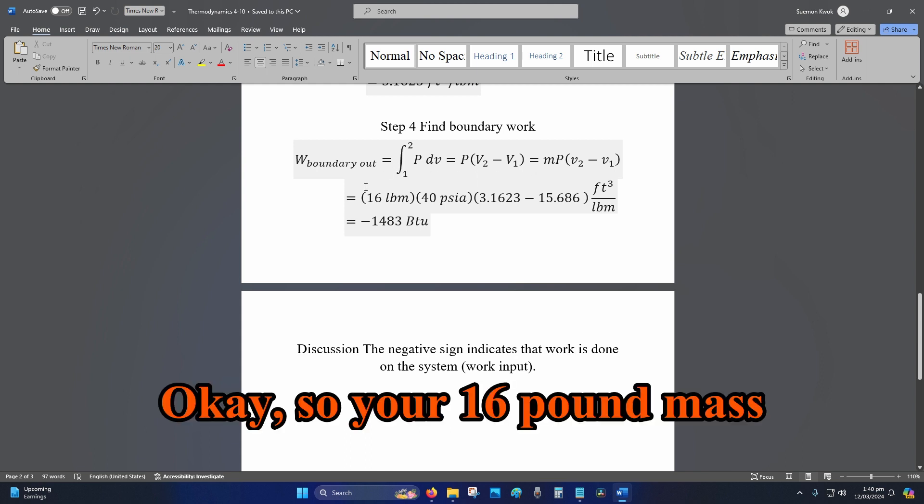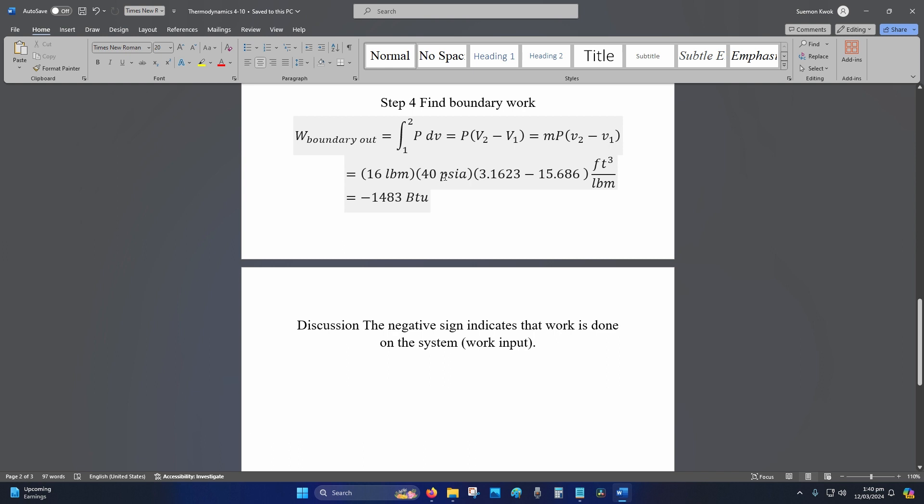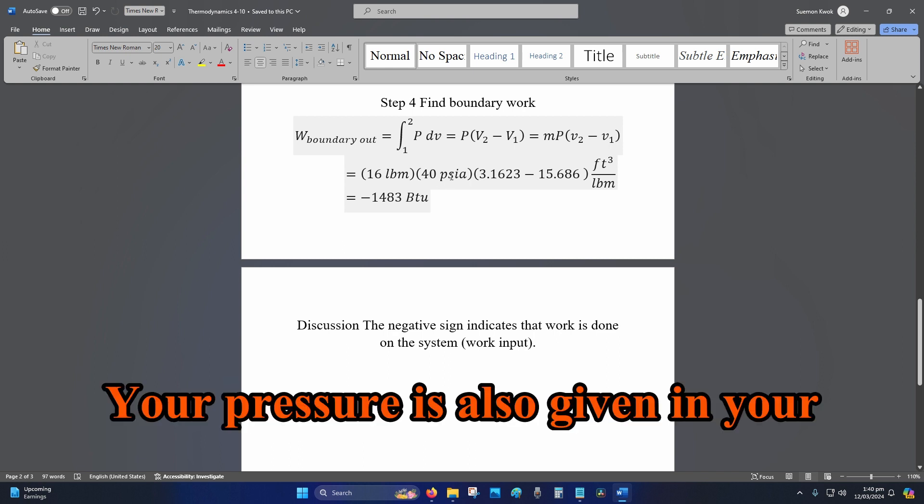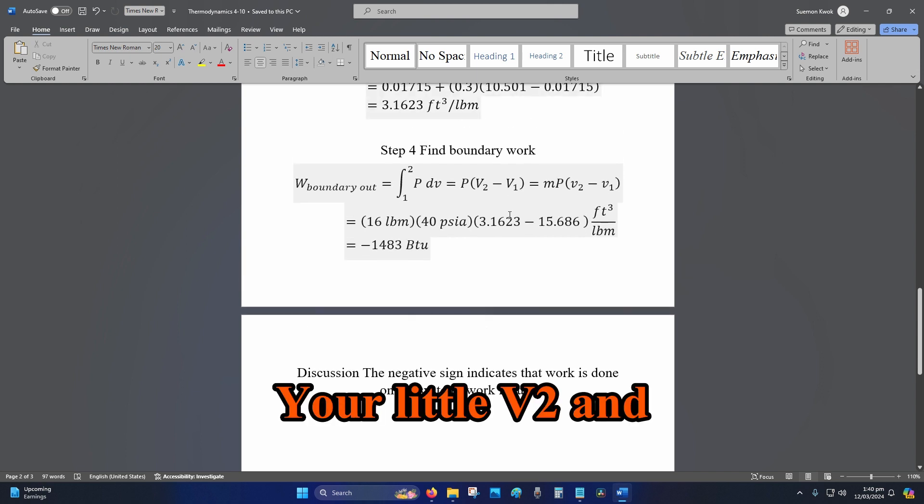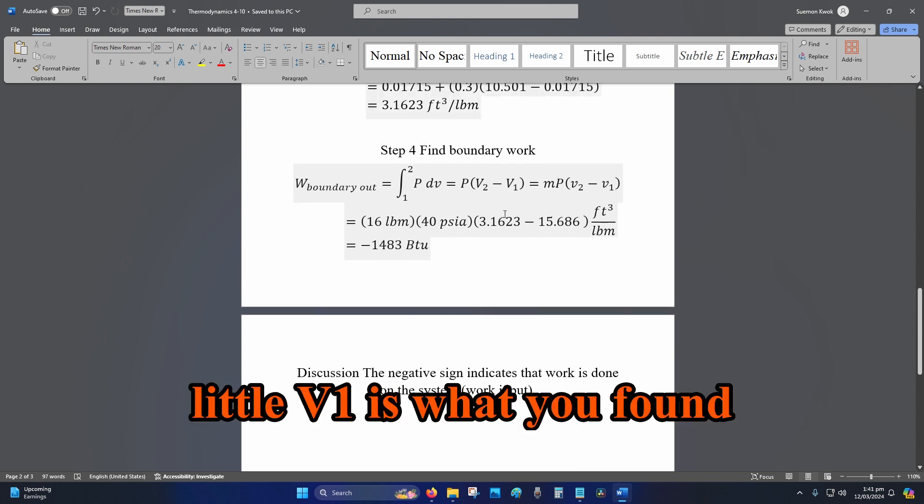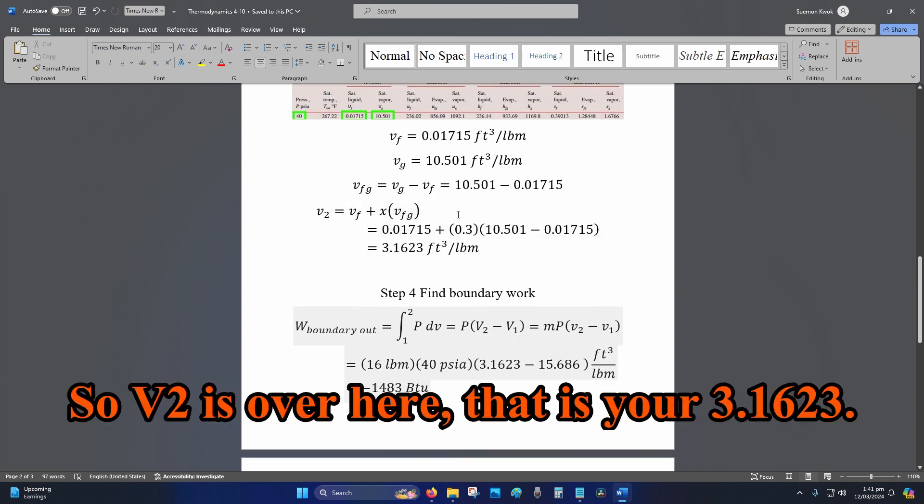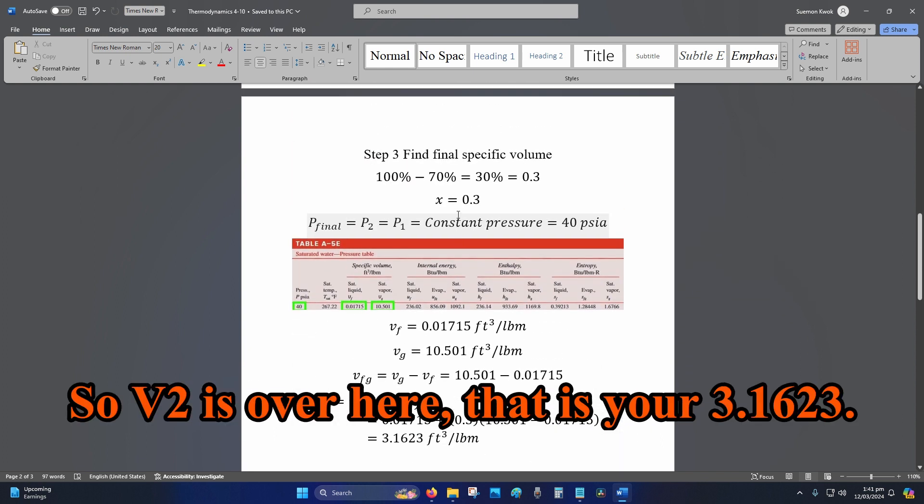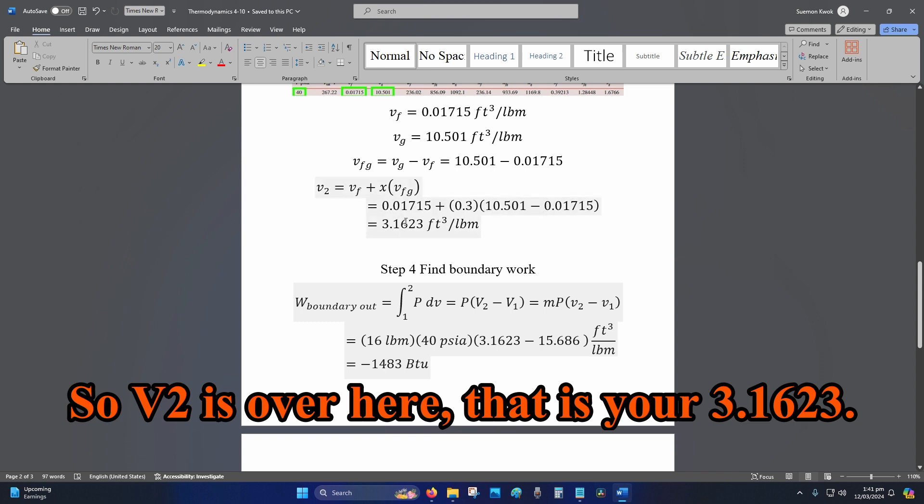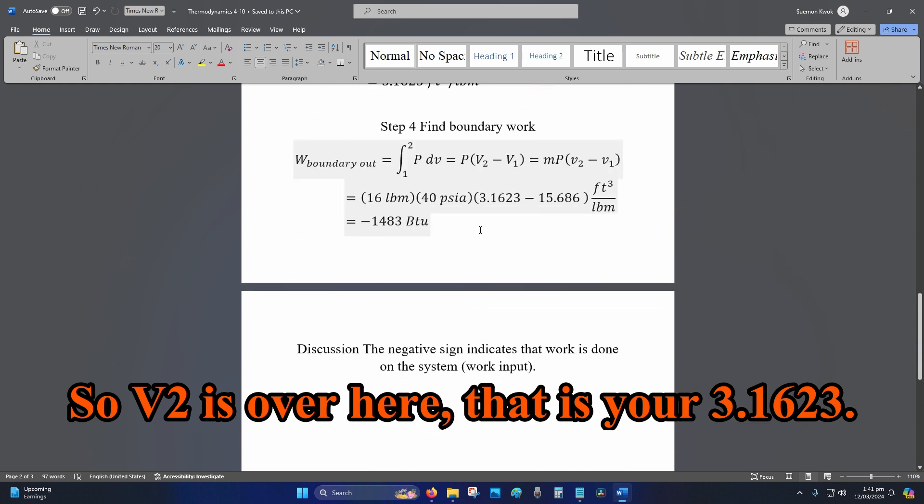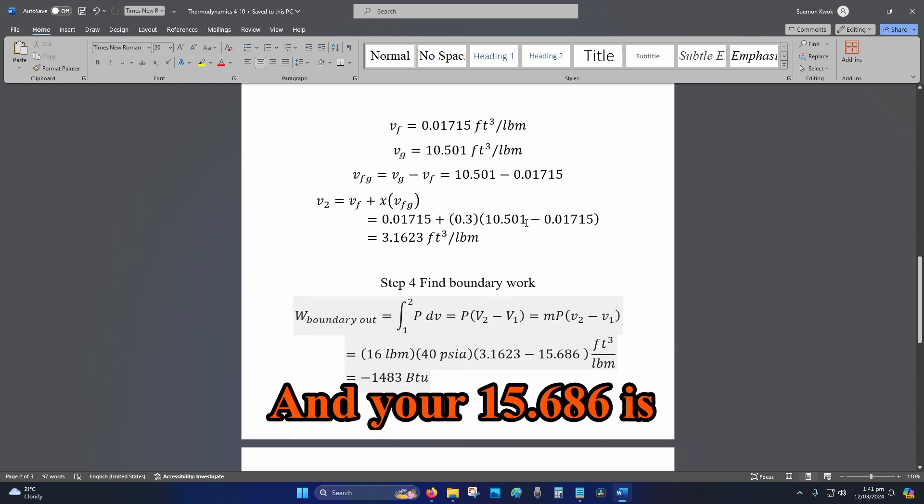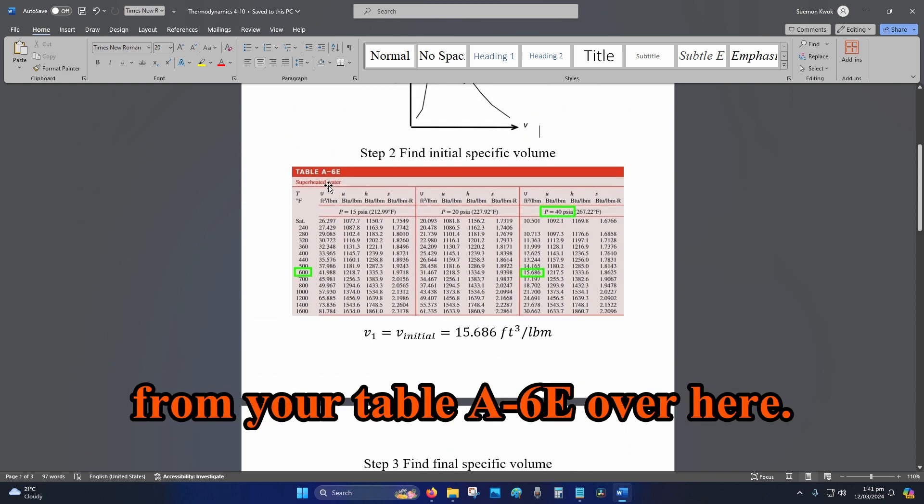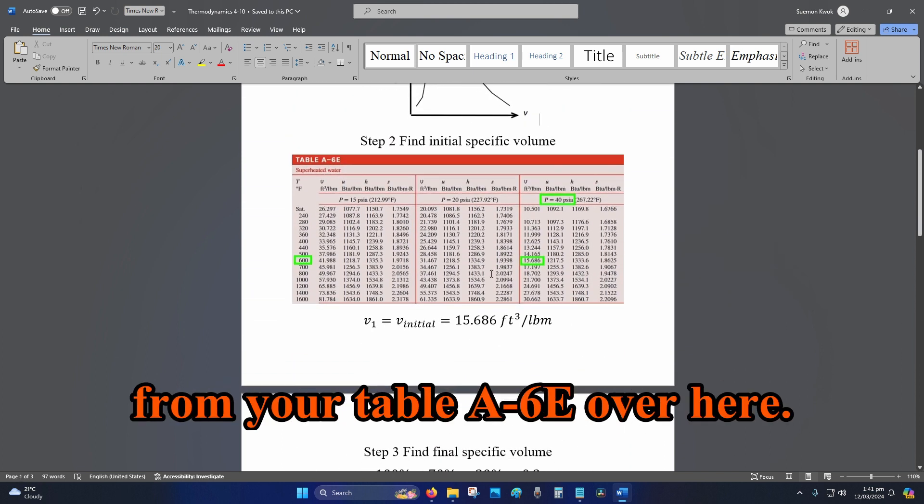So M is your mass multiplied by your pressure multiplied by the difference in specific volume of final minus initial. So what the M actually does is it turns the little Vs into a capital V. Okay, so your 16 pound mass is given in your question. Your pressure is also given in your question, your 40 psia. Your little V2 and little V1 is what you found in step 3 and 2. So V2 is over here, that is your 3.1623, and your 15.686 is found from your step 2 from your table A-6E over here.